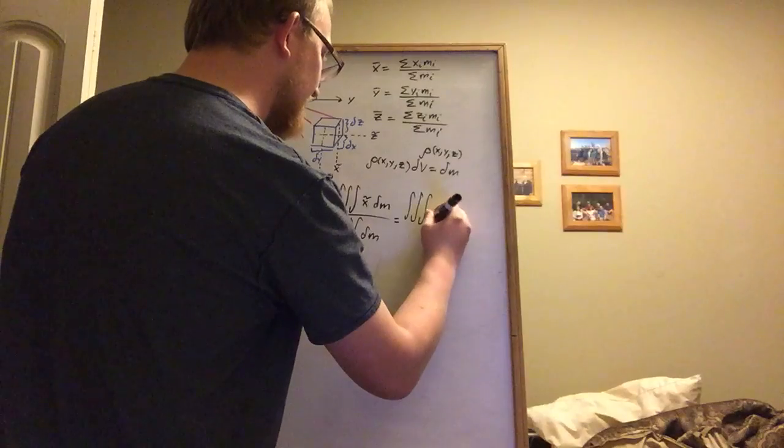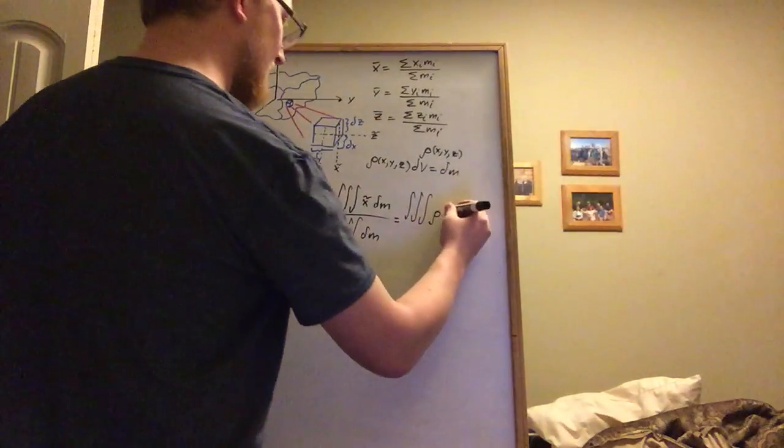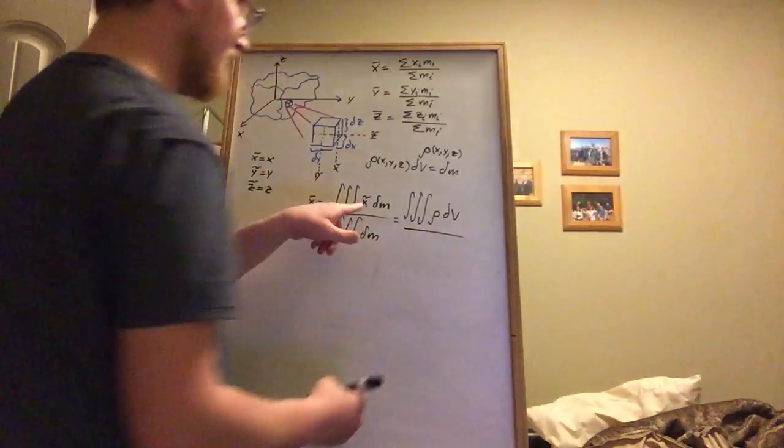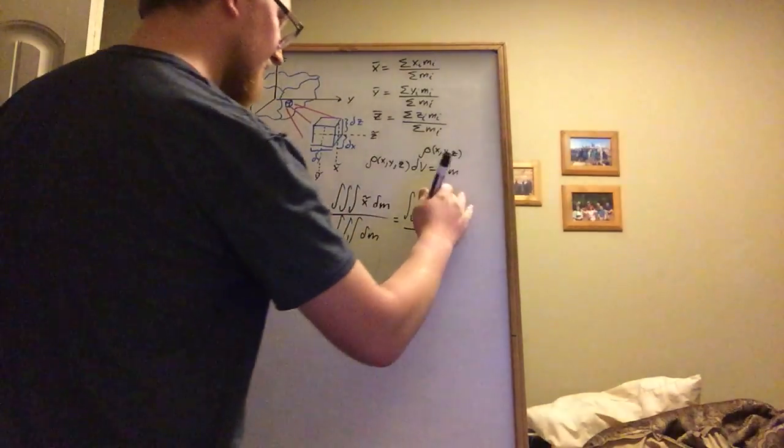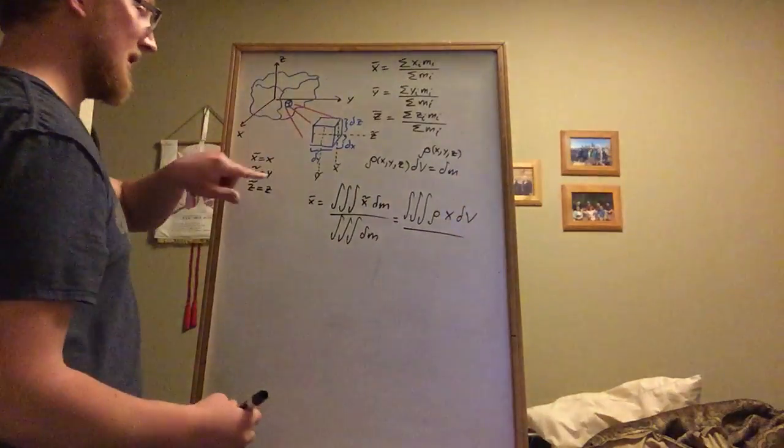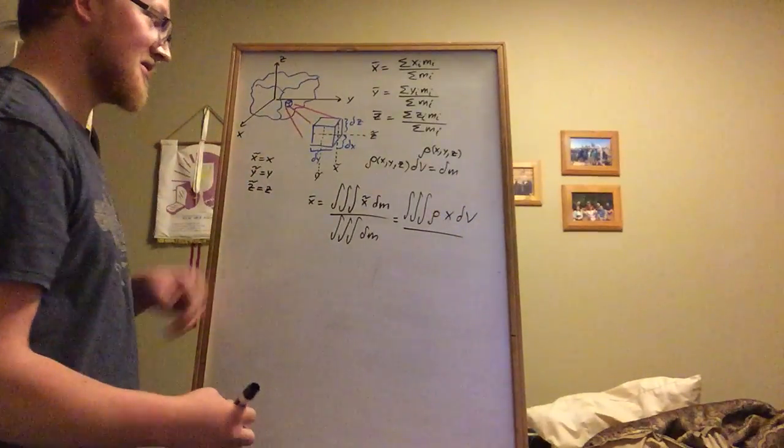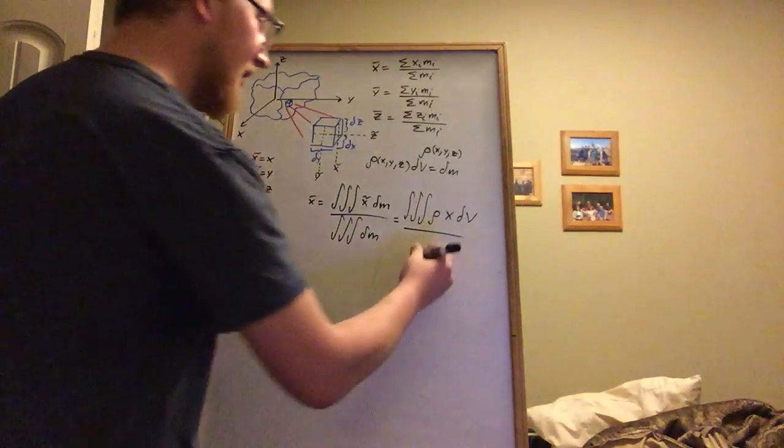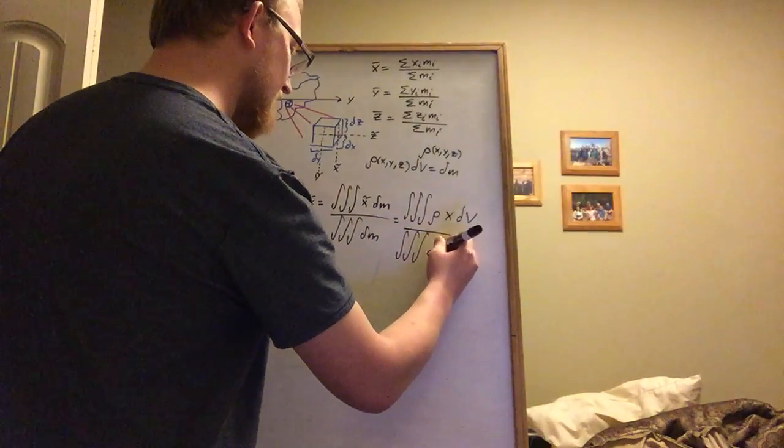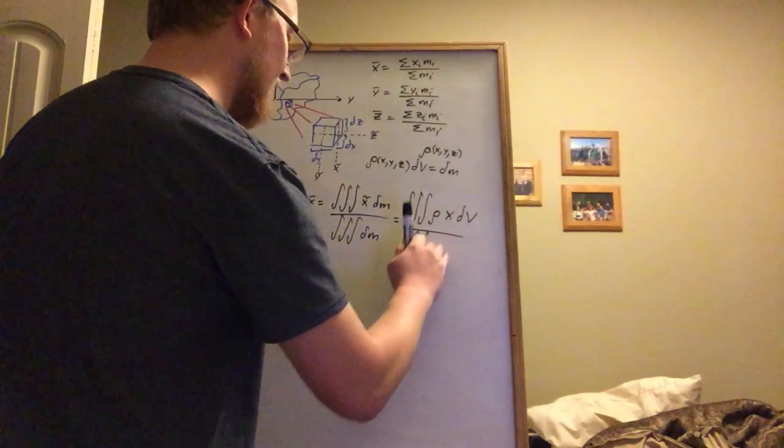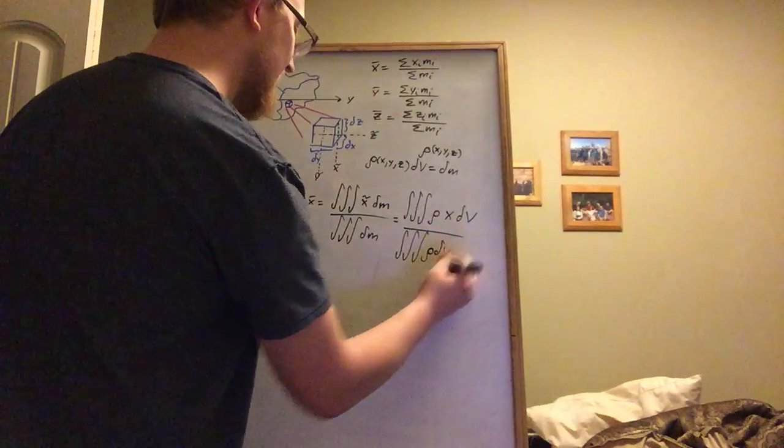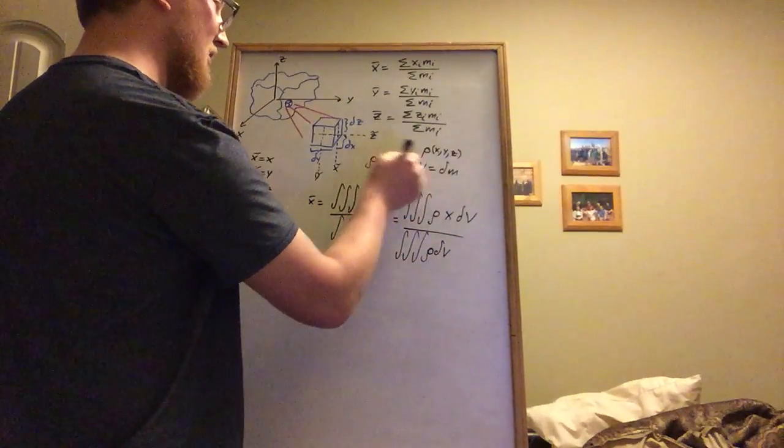And dm was ρ dV. And now we're dividing—oh whoops, x tilde is x, so we need to put x in here. So remember our guess for x tilde was that it was pretty much x, and we're going to divide by just the integral of the mass, which is going to be, once again, ρ dV because dm equals ρ dV.